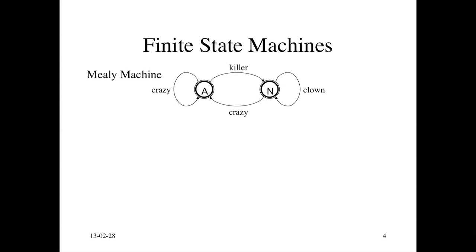This is called a Mealy machine after a guy called Mealy. It turns out you can actually represent exactly the same information in a slightly different way. From adjective state, you can generate a word, crazy.